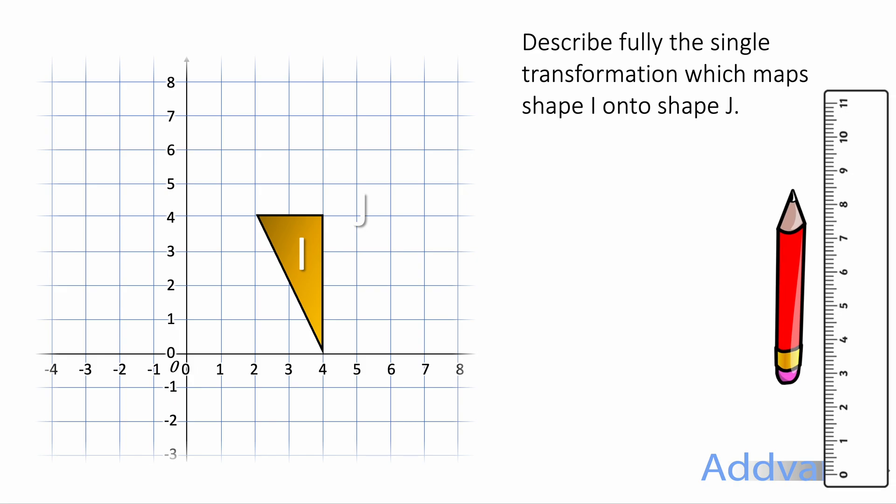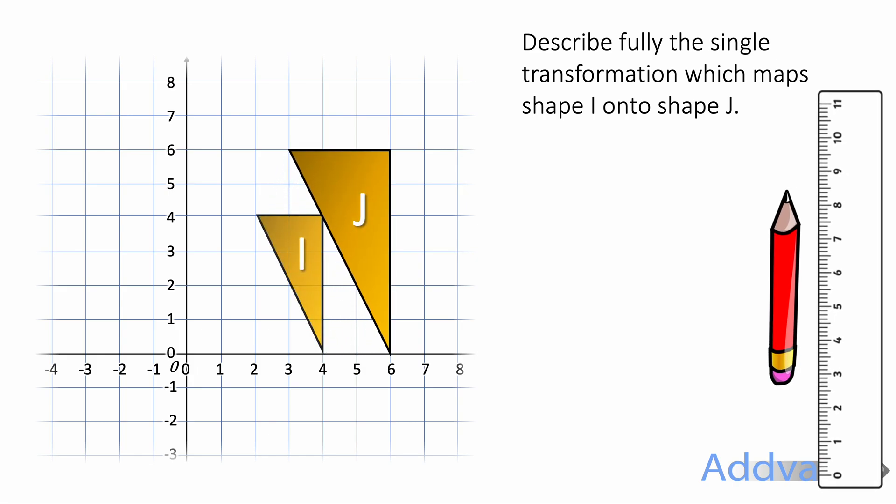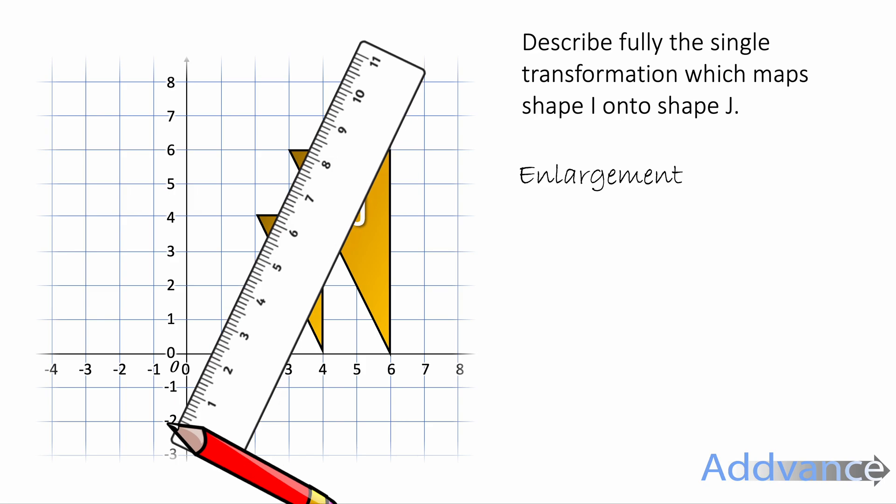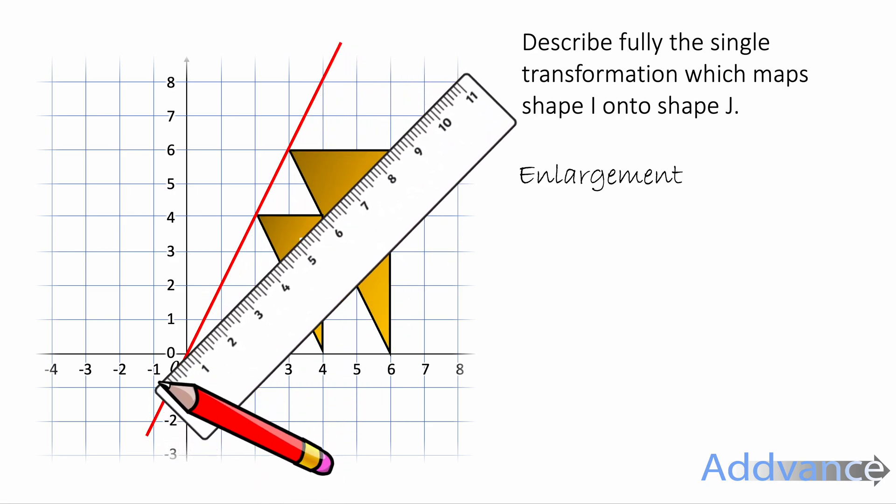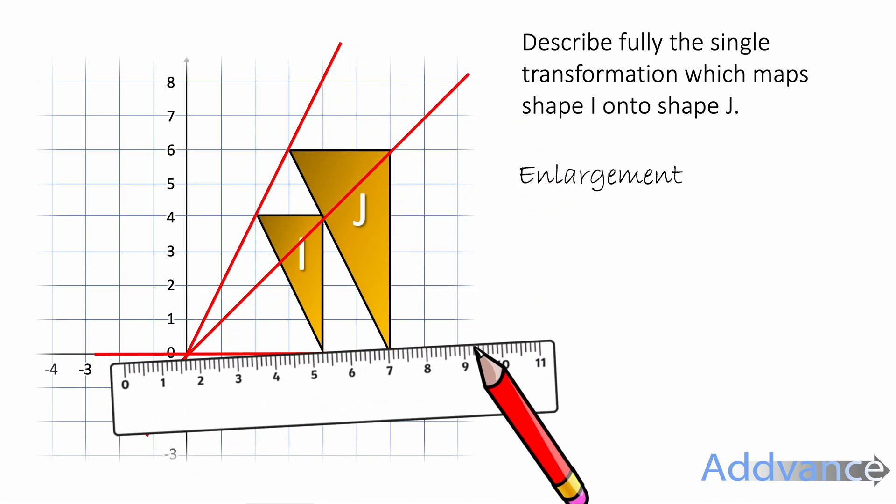Now we're going to do this, going from I to J. And this, you should see, is an enlargement. But to find the centre of enlargement, we're going to connect up the matching corners of the two shapes.